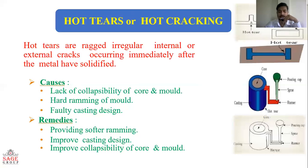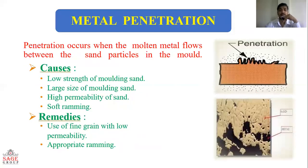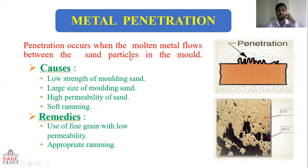The next defect is metal penetration. Metal penetration occurs when molten metal flows between the sand particles of the mold. Causes include: low strength of molding sand, large grain size of molding sand, high permeability of sand, and soft ramming.